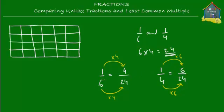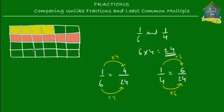Representing 4/24 — which equals one-sixth — on the lasagna, we color 4 squares. There are 24 pieces because 6 times 4 equals 24. That's your one-sixth or 4/24. For 6/24, which equals one-fourth, we mark one, two, three, four, five, six squares — six out of 24 pieces.